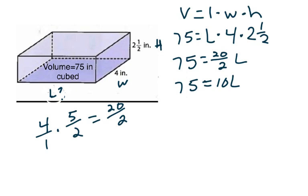How do I get L by itself? 10 L, that should signify to you that that is multiplication. So, what you're going to do is divide. How do we undo multiplication? We use inverse operation, which is division. We're going to divide by 10 on both sides.